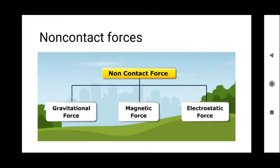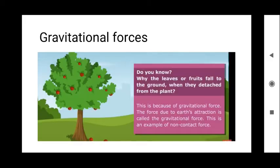Now let us come to non-contact force, which is of three types: gravitational, magnetic, and electrostatic. As the name suggests, non-contact forces are those forces which can be exerted without actually touching the respective bodies. Do you know why the fruits fall to the ground when detached from the plant? This is because of gravitational force. The force due to the earth's attraction is called gravitational force. The fruit is not in contact with the ground, but it falls towards it — so this is a non-contact force.